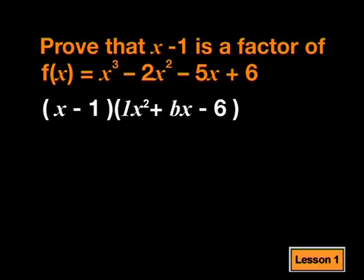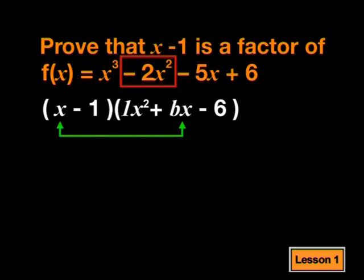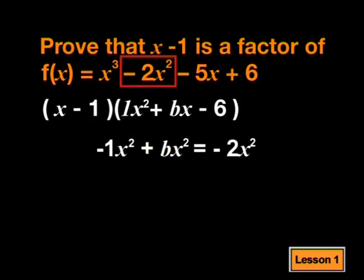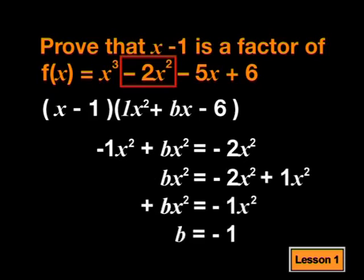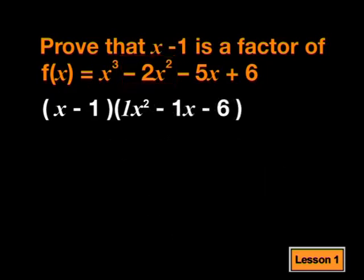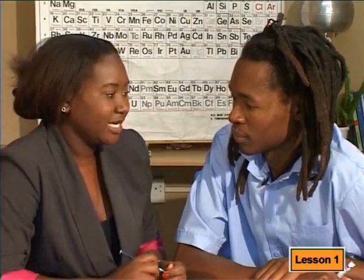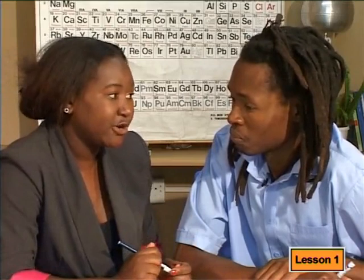All we need now is the value of b, which is a little more difficult. To find the x squared term, we expand the brackets and collect like terms — specifically, multiply the second term of the first bracket with the first term of the second bracket, then collect it with the first term of the first bracket multiplied by the second term of the second bracket. In this case, minus 1 multiplied by x squared, added to x multiplied by bx, must equal negative 2x squared, giving us an equation to calculate b. In our example, b equals negative 1, giving us a trinomial we can then factorize. Note that if there are no x squared terms, we can still use this method to find b by comparing the x terms.